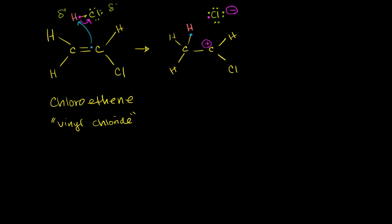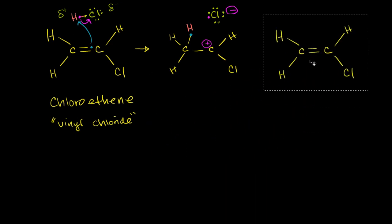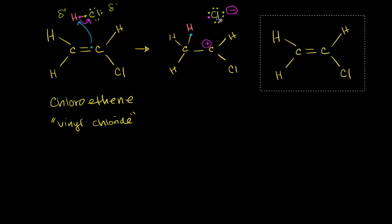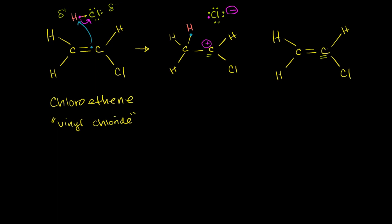So let us throw another one of those in there — we have more molecules of chloroethene. So the carbocation could take an electron from the chloride ion, or it could take an electron from another chloroethene molecule. Remember, just like the first carbon that lost its electron, this carbon is OK — it doesn't require a huge amount of energy to make this carbon lose its electron, because it's bonded to other things that are willing to share with it a little bit. So this electron is green, and it goes and bonds with the carbocation carbon.